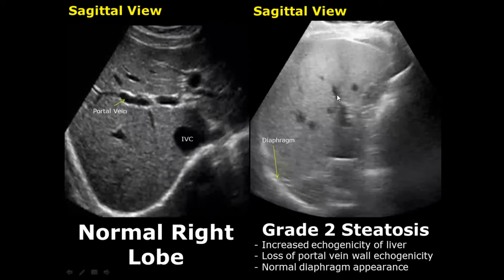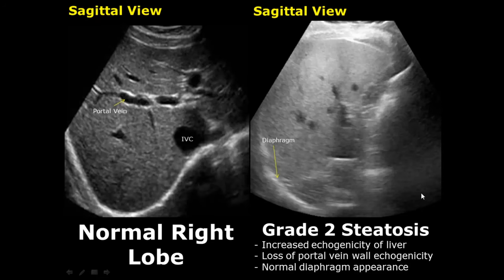In grade two steatosis, the echogenicity of the liver is increased and we cannot see the hyperechoic walls of the portal vein clearly. However, we can still see the diaphragm clearly, so this is a feature of grade two steatosis.